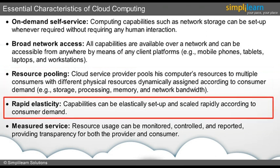Rapid elasticity is one more characteristic of cloud computing. It refers to scaling up or scaling down of resources according to demand. Considering our previous example, when the total number of passengers does not occupy all the coaches, the coaches can be disengaged and joined with another train that has more passengers. Similarly, in cloud, resource utilization can be increased or decreased according to the consumer's needs.